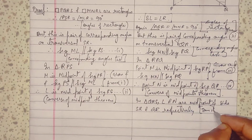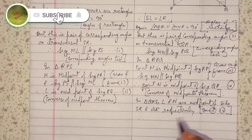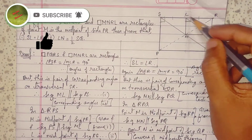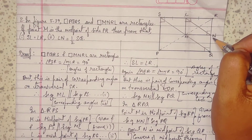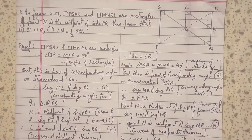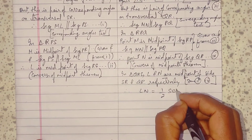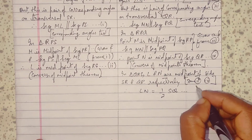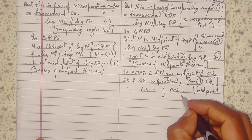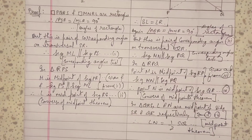In triangle QRS, L and N are midpoints of seg SR and seg QR respectively, from steps 2 and 4. Therefore, LN equals half of SQ by the midpoint theorem. Hence proved.